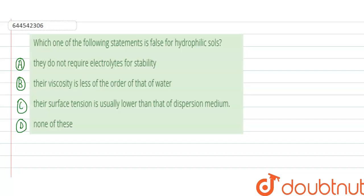Hello students, today our question is: which one of the following statements is false for hydrophilic sols? Our first option is: they don't require electrolytes for stability. Next option is: their viscosity is less, of the order of that of water. Next option is: their surface tension is usually lower than that of dispersion medium. And next option is: none of these.